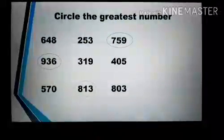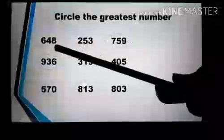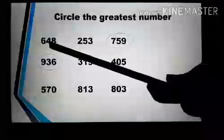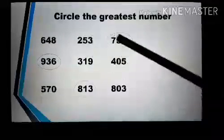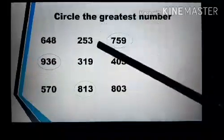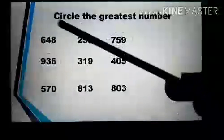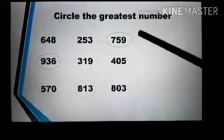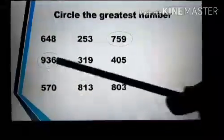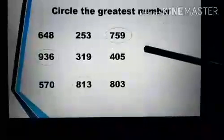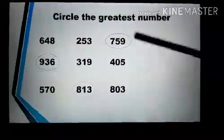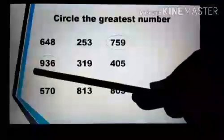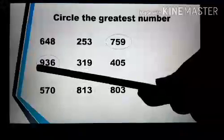Our next question is: circle the greatest number. Our first example is 648, 253, and 759. We compare the first digit of each number: 6, 2, and 7. 7 is bigger than 2 and 6, so the number 759 is the greatest. Next we have 936, 319, and 405. Comparing the first digits: 9, 3, and 4. 9 is the biggest, so the number 936 is the greatest number.